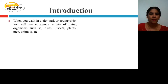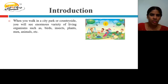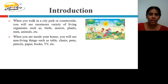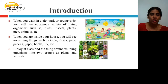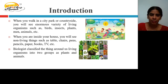When you walk in a city park or countryside, you will see an enormous variety of living organisms such as birds, insects, plants, people, animals, etc. When you are inside your house, you will see non-living things such as tables, chairs, pens, pencils, paper, books, TV, etc. Biologists classify the things around us into two groups: plants and animals.